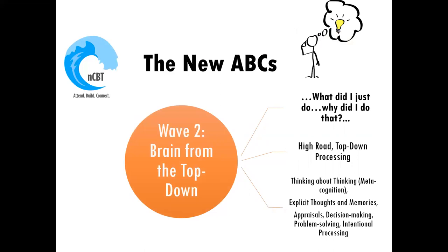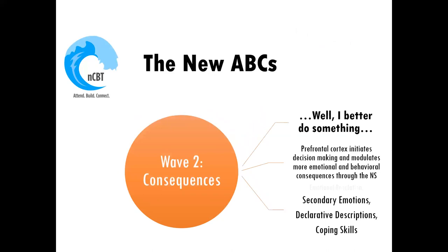We then become aware of being aware, and that is brain from the top down — that's wave two B. That's when we start really thinking about what's just happened and becoming aware of our own physiological activation. Then we make sense of what's just happened, and that is wave two consequences. That's a brief introduction to the model of the waves of NCBT, and we'll be talking much more about that in class.